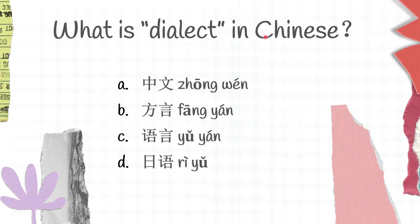What is dialect in Chinese? A 中文, B 方言, C 语言, D 日语. Which one do you think is the right one? 中文 is Chinese language, 方言 is dialect, 语言 is language, 日语 is Japanese language. And B is the right answer for this question — 方言.